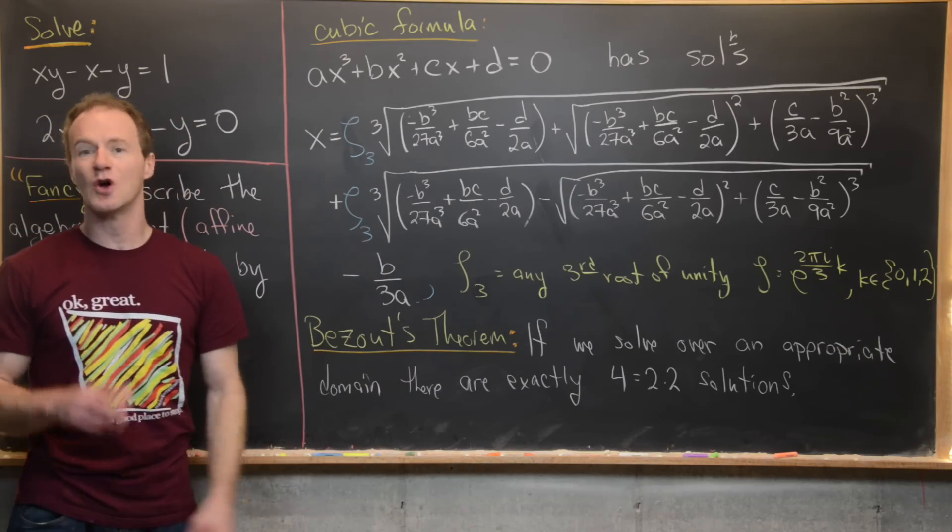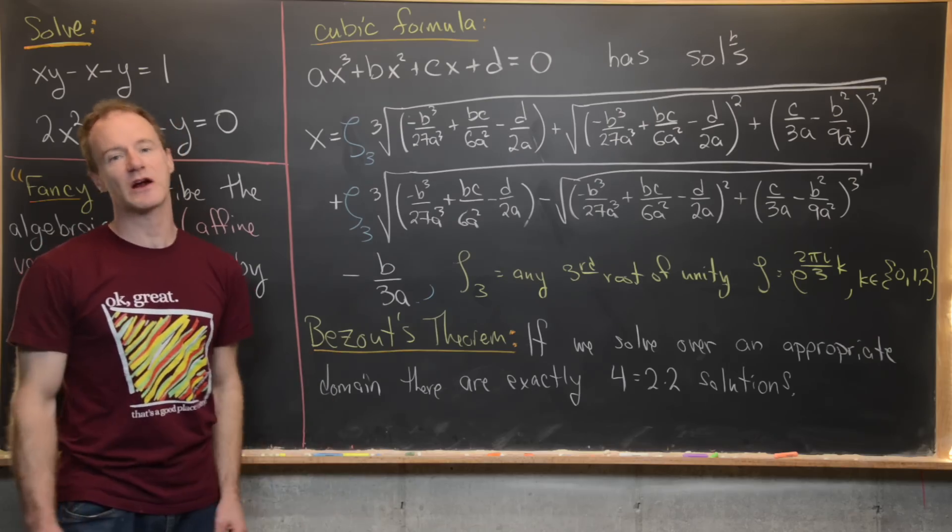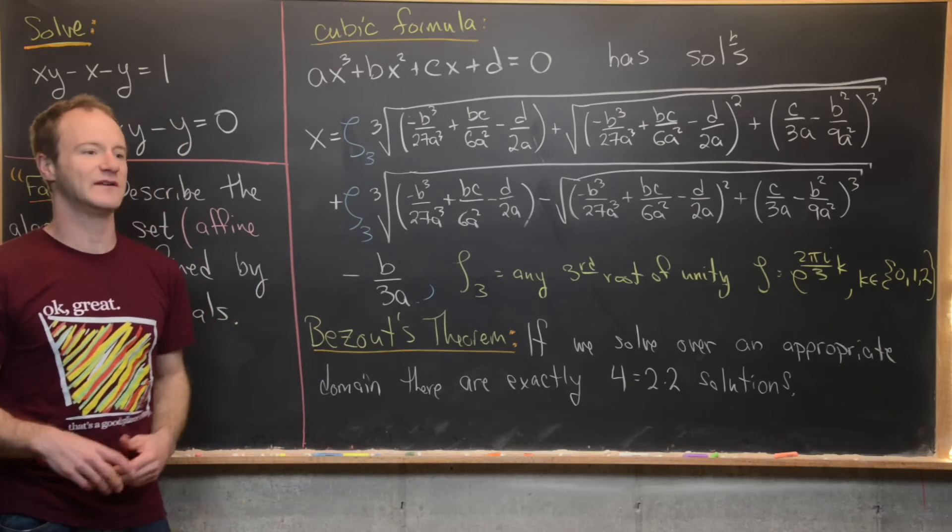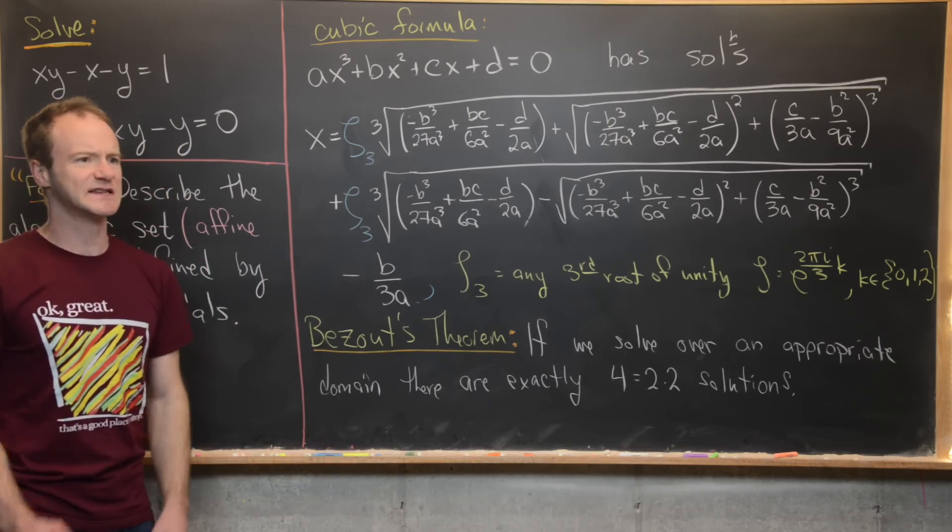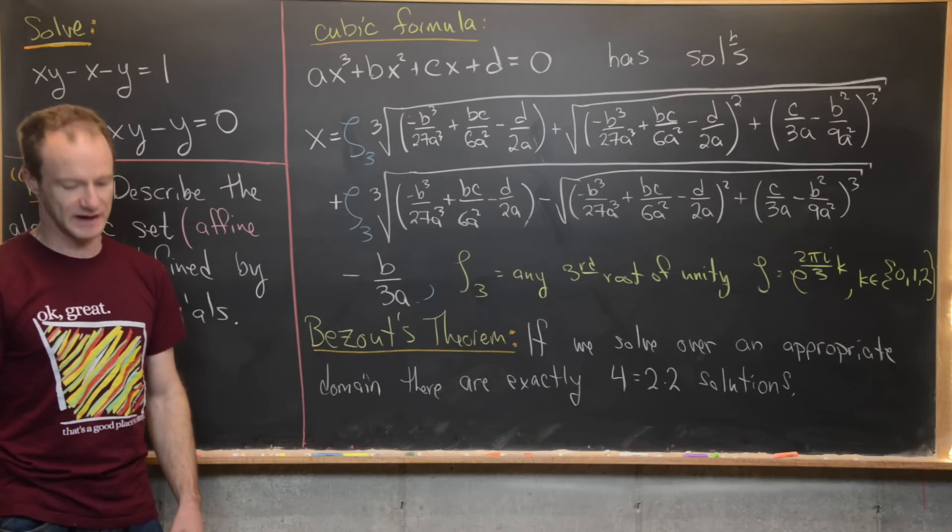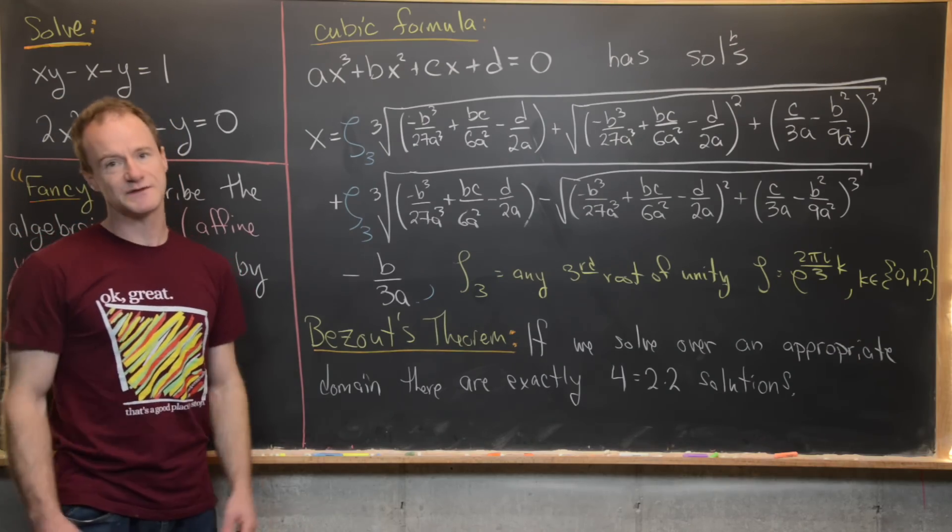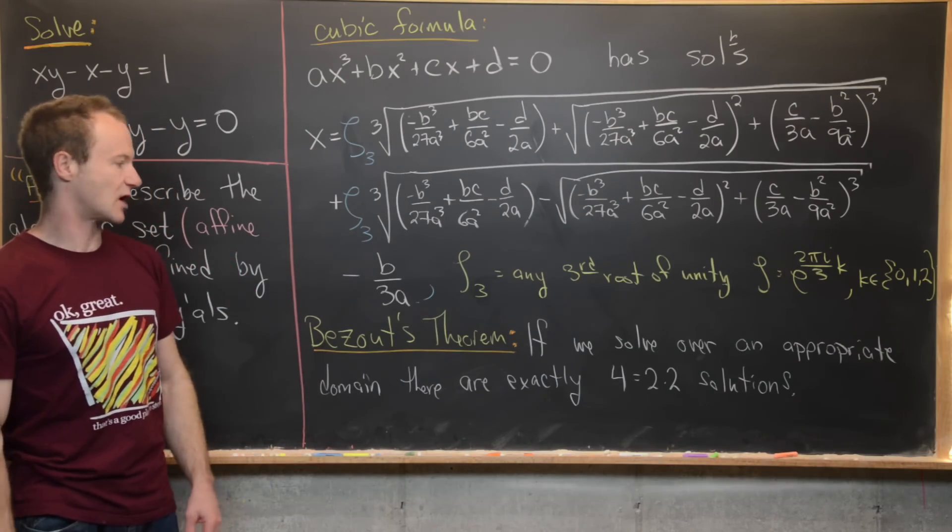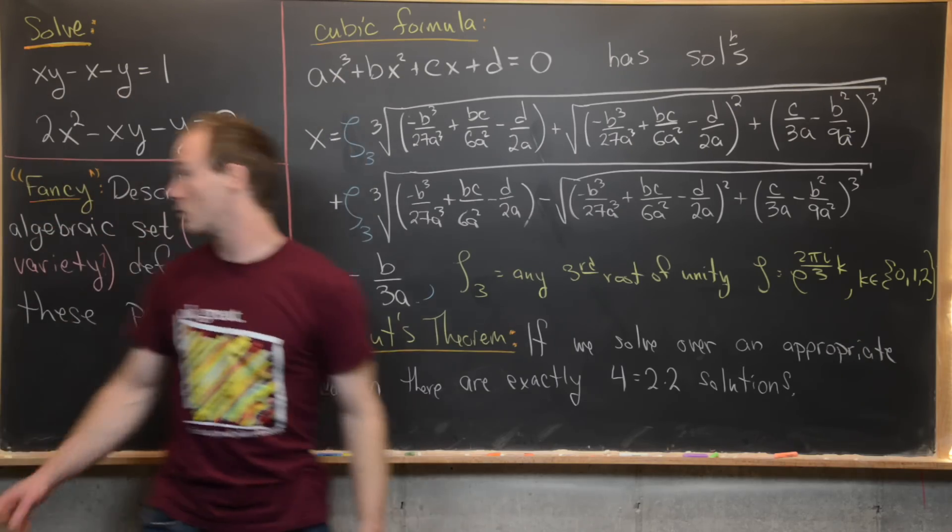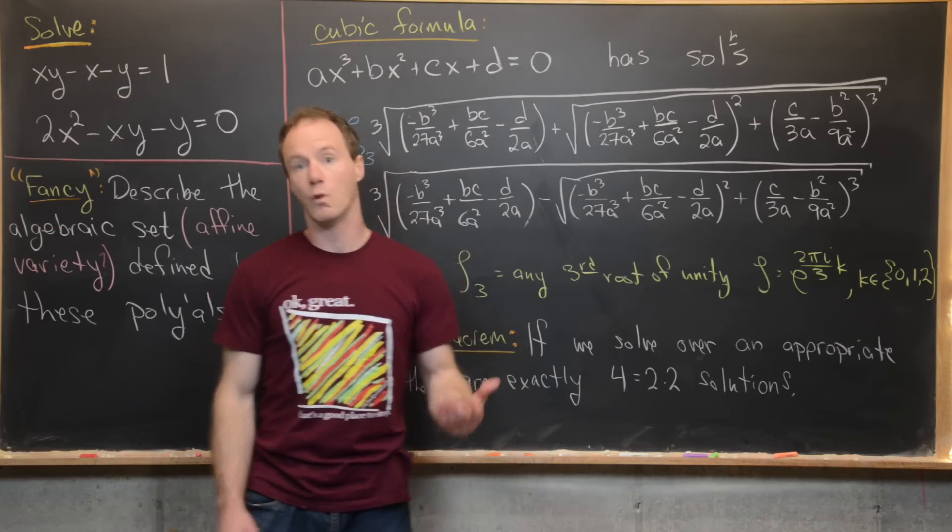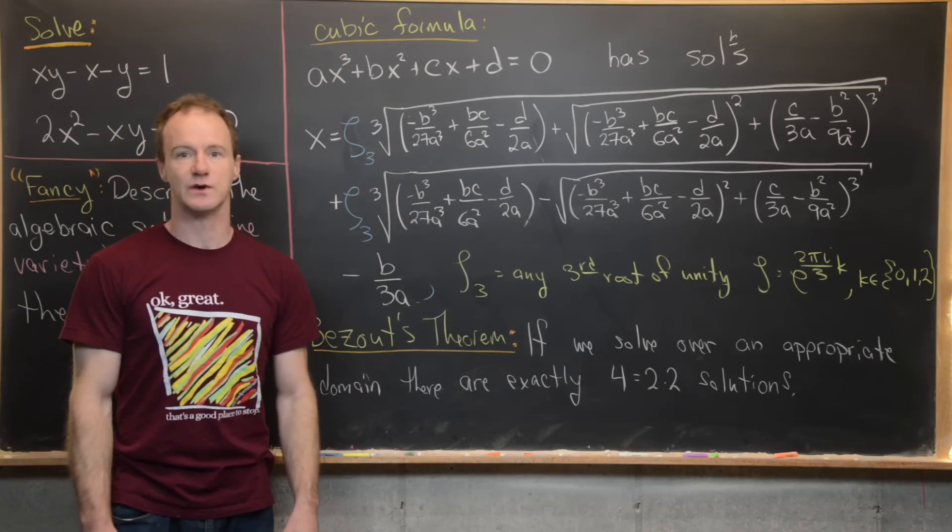The real solution and then those two other complex solutions from including this root of unity. So where's the other solution? Well we're not going to look at it super carefully but it is a point at infinity that you would see inside of some sort of complex projective space. Okay so we've said a bunch of fancy stuff about this problem. Now I'll go ahead and get rid of all of this stuff and we'll actually calculate one of the solutions to this equation.